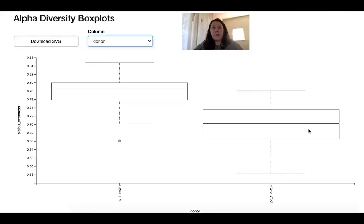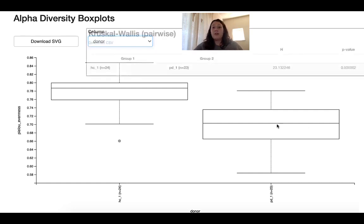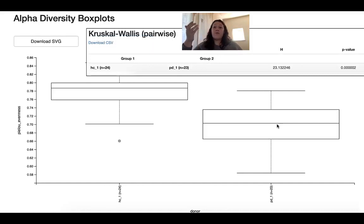We found that donor is a primary driver of alpha diversity. This evenness plot should look familiar from our alpha diversity analysis tutorial. We were able to see that the healthy and the Parkinson's mouse were significantly different in terms of alpha diversity.